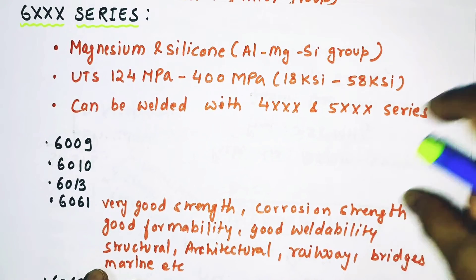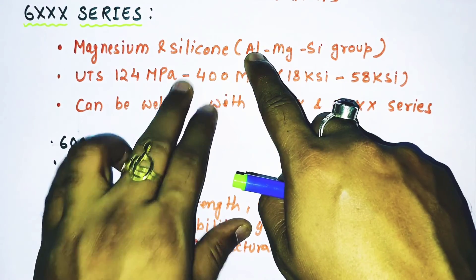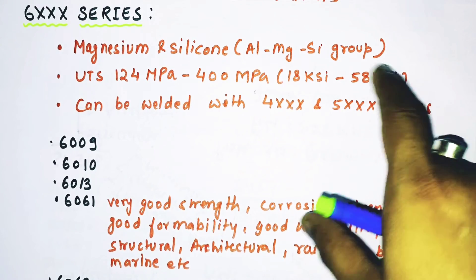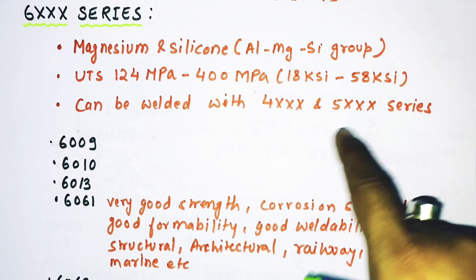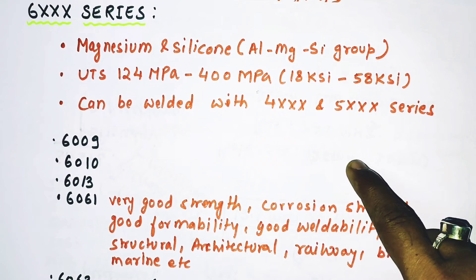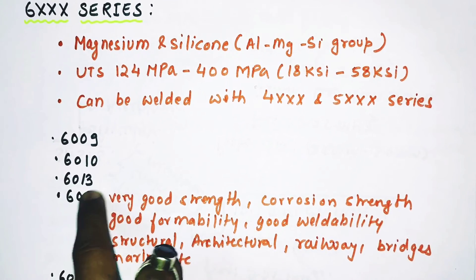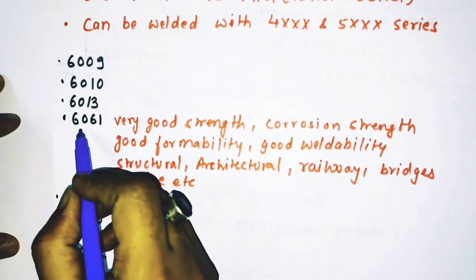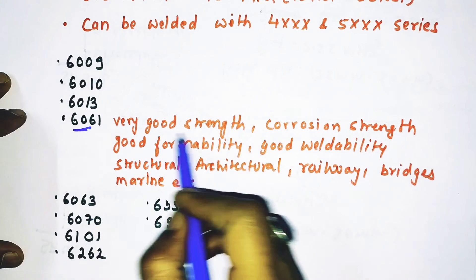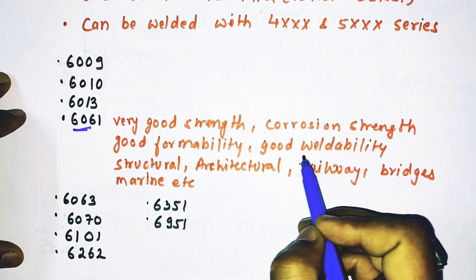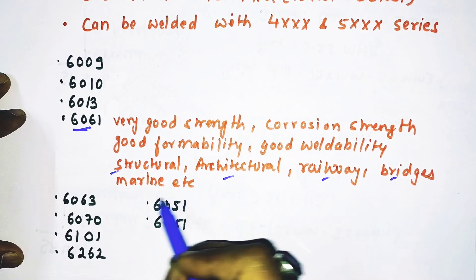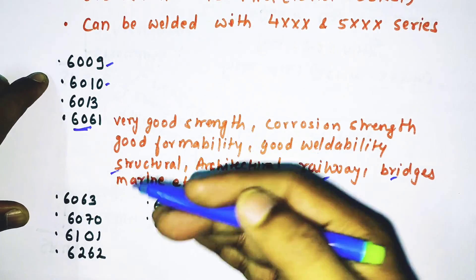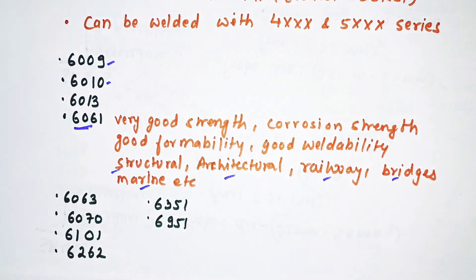The 6xxx series has magnesium and silicon together as alloying elements, known as the aluminum-magnesium-silicon alloy group. Its ultimate tensile strength ranges from 124 MPa to 400 MPa (18 ksi to 58 ksi). It can be welded with 4xxx and 5xxx series filler metals. Important alloys include 6009, 6010, 6013, 6061, 6063, 6070, 6101, 6262, 6351, and 6951. Among these, 6061 has a very wide range of applications due to its good strength, corrosion resistance, formability, and weldability — used in structural, architectural, railway, bridge, and marine applications.